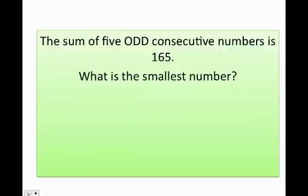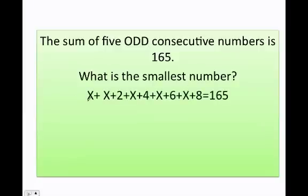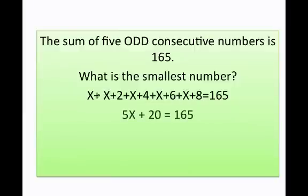The sum of five odd consecutive numbers is 165. What is the smallest number? For odd numbers, we start with x, then x plus 2, x plus 4, x plus 6, and x plus 8. This whole expression equals 165. We have five x's, and 2 plus 4 plus 6 plus 8 equals 20.